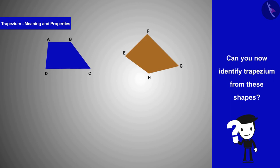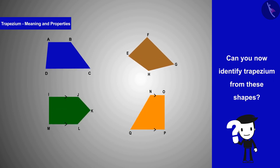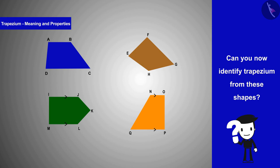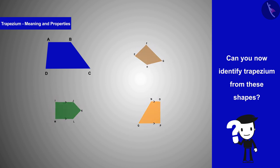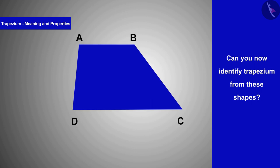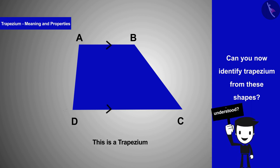Can you now identify a trapezium from these shapes? If we look at the blue figure, it is a quadrilateral in which a pair of sides is parallel. Hence, this figure is a trapezium.